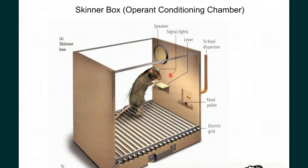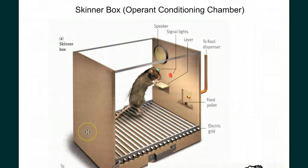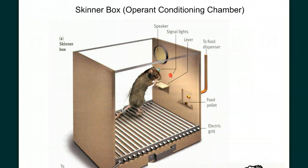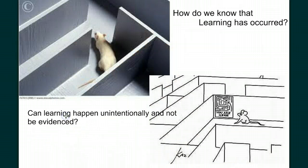They evidenced learning by changing their behavior. The dog learned to associate the bell with impending food, and the rat learned to associate the pushing of the lever with the reinforcer — food. Can learning occur without a change in behavior? Can learning happen unintentionally and not be evidenced? Can learning happen without associating two stimuli or without a reinforcer present?